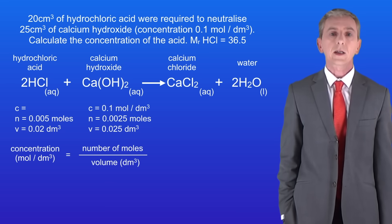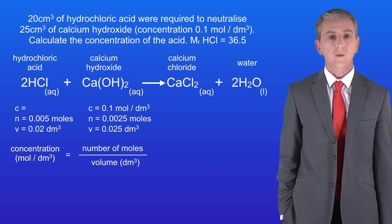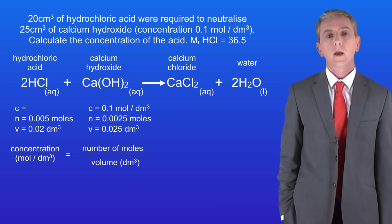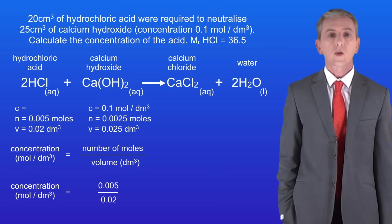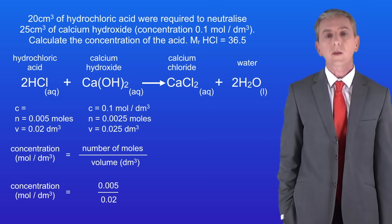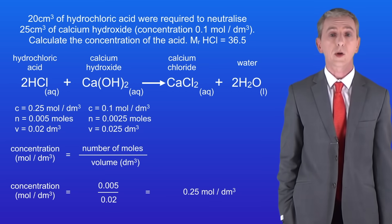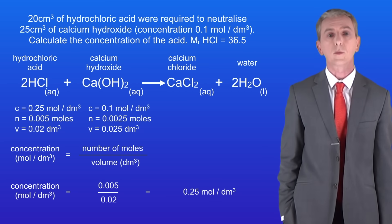Now we can calculate the concentration of the hydrochloric acid by dividing the number of moles by the volume. The number of moles is 0.005 and the volume is 0.02 decimetres cubed. Putting these numbers into the equation gives us a concentration of 0.25 moles per decimetre cubed for the hydrochloric acid.